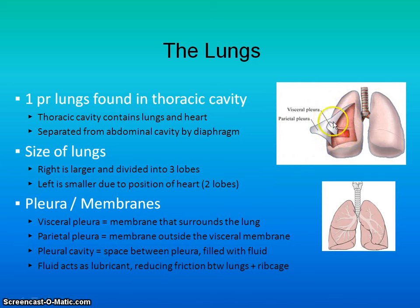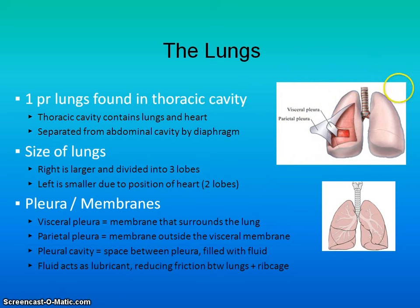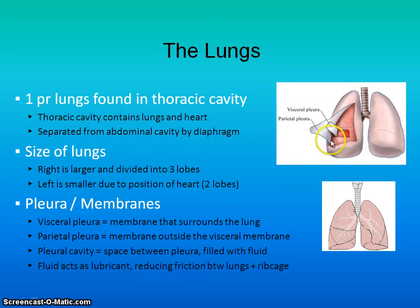The lungs are surrounded and protected by two membranes called pleura. The first one that lies right on the lung tissue is called the visceral pleura — viscera means internal organ. The one on the outside is the parietal pleura. In between the two there's a space called the pleural cavity, and there's fluid in there that reduces friction if your lungs come in contact with the rib cage.